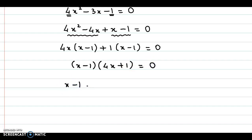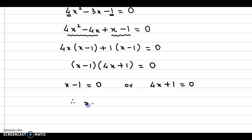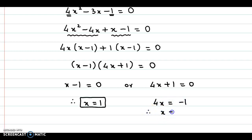So we have two cases: X minus 1 is 0 or 4X plus 1 is equal to 0. If X minus 1 is 0, we obtain X is equal to 1. And simplifying 4X plus 1 equal to 0, we have 4X is equal to minus 1, therefore X is equal to minus 1 by 4. So these are the two values of X: 1 and minus 1 by 4.